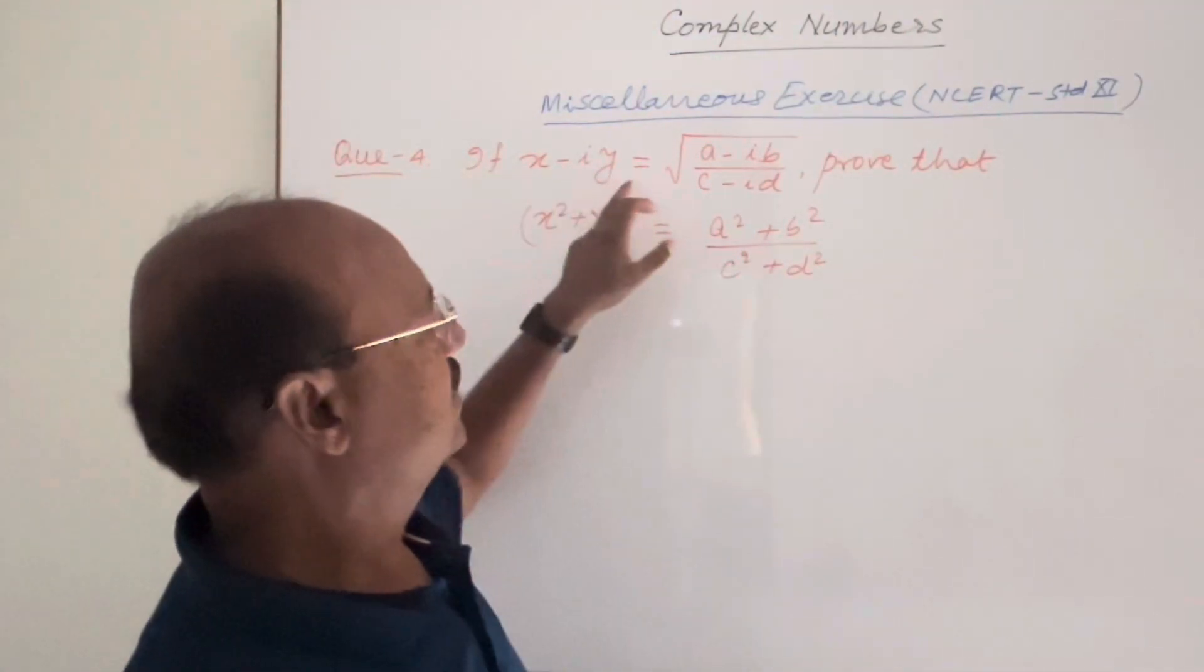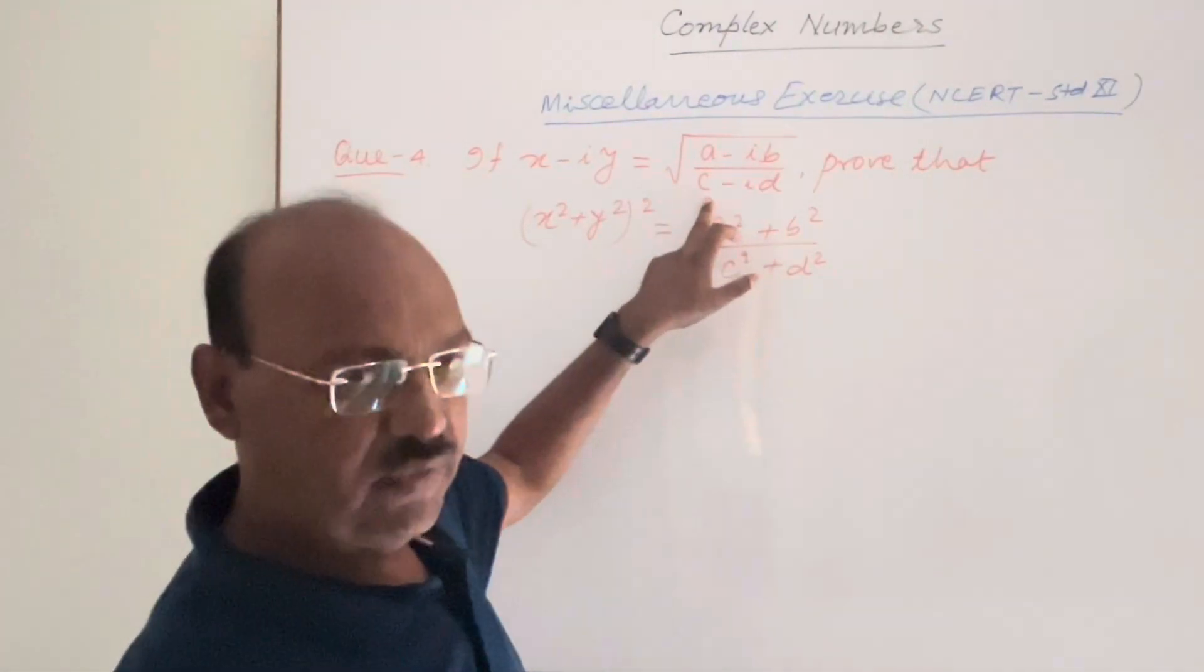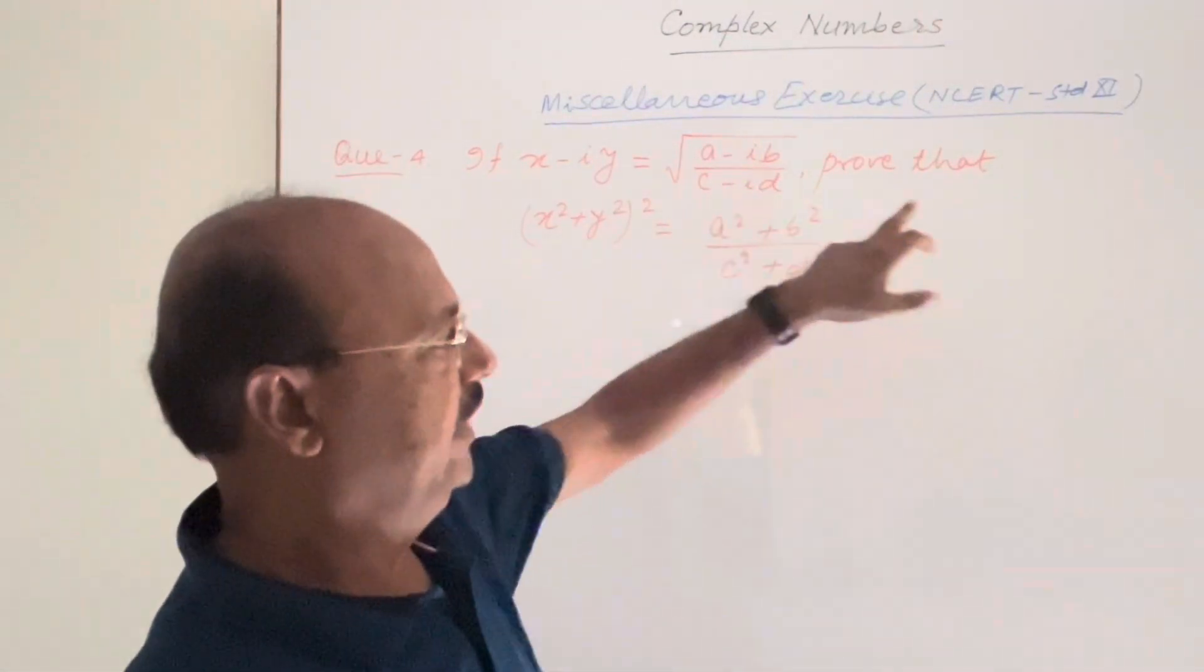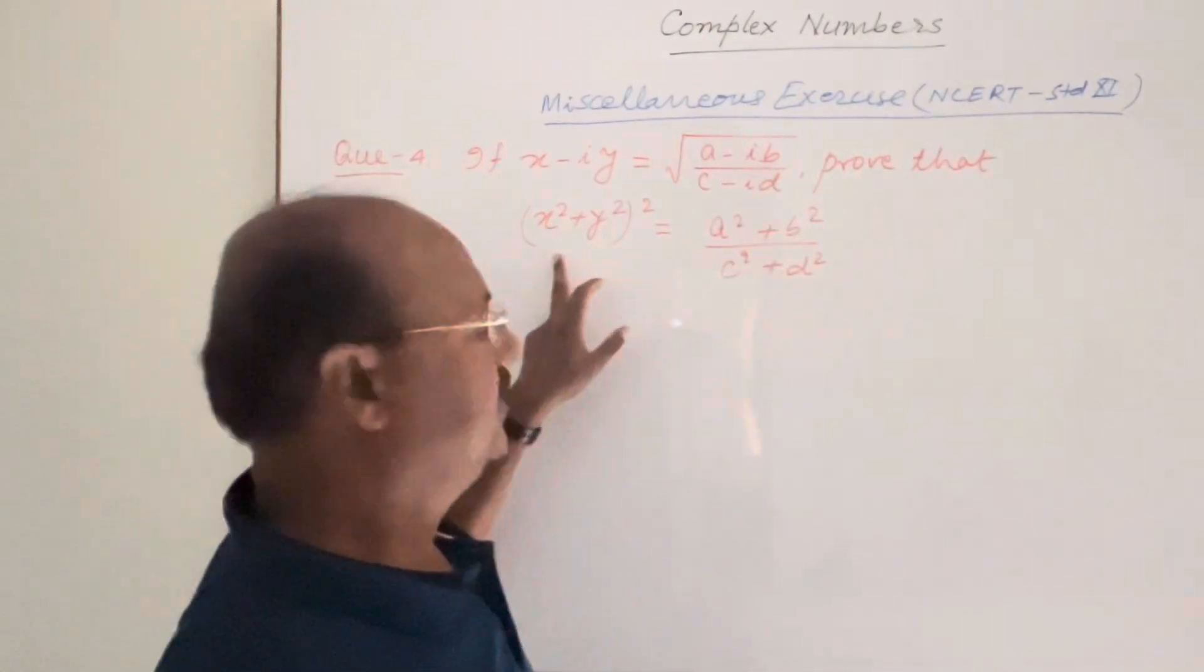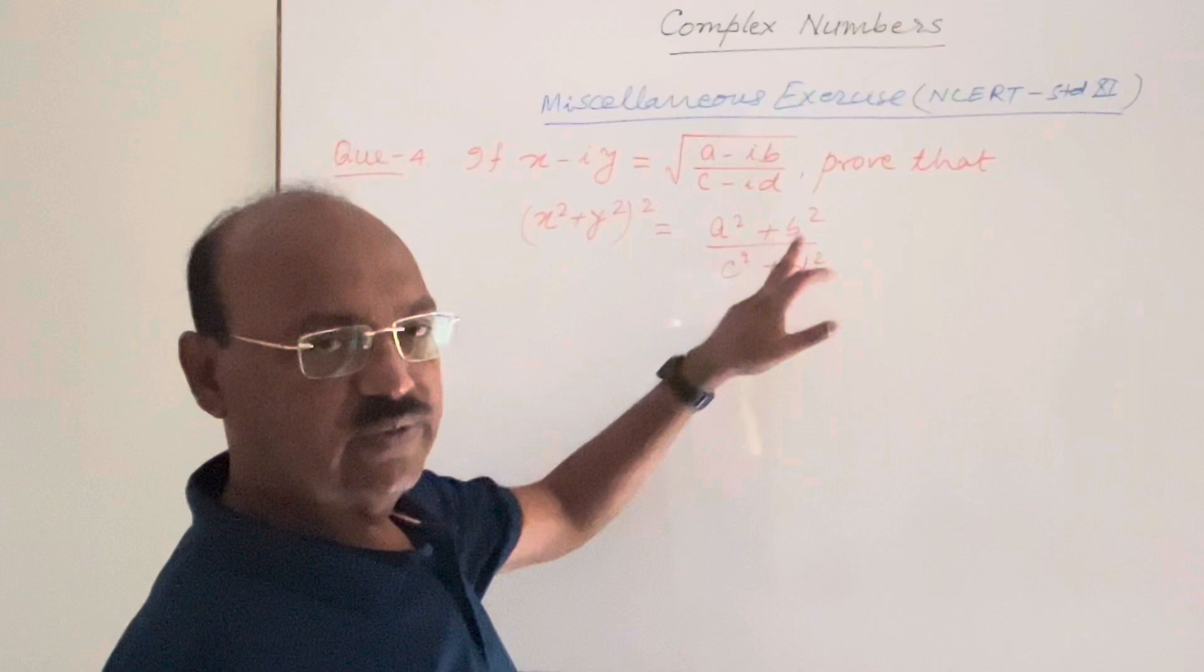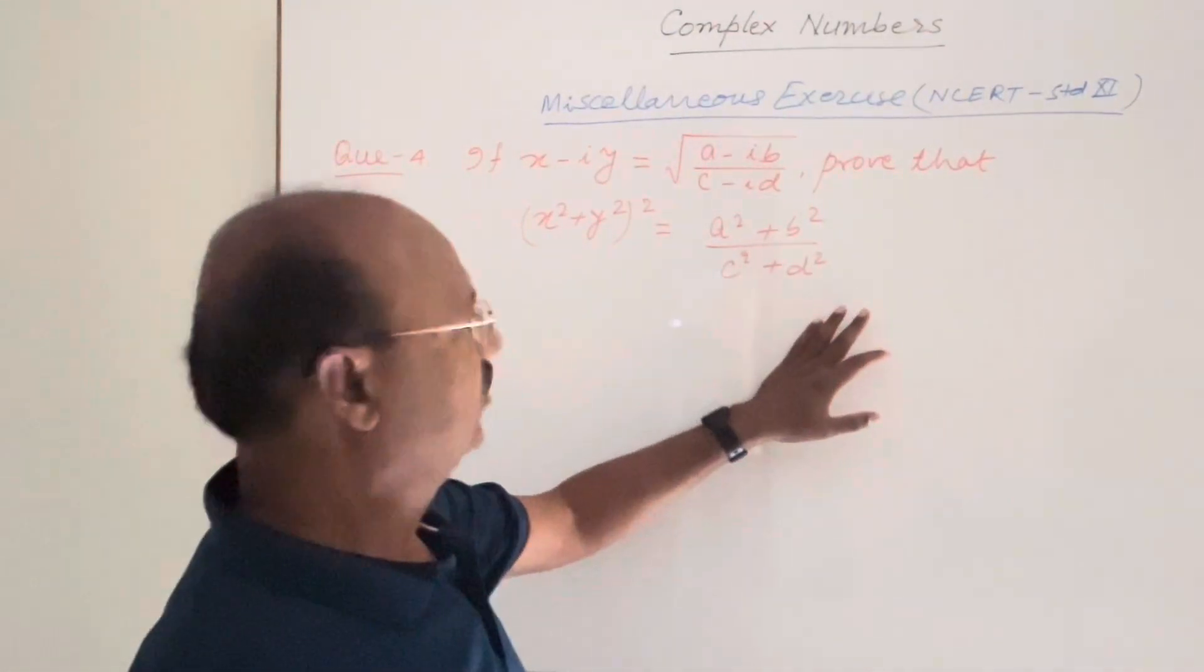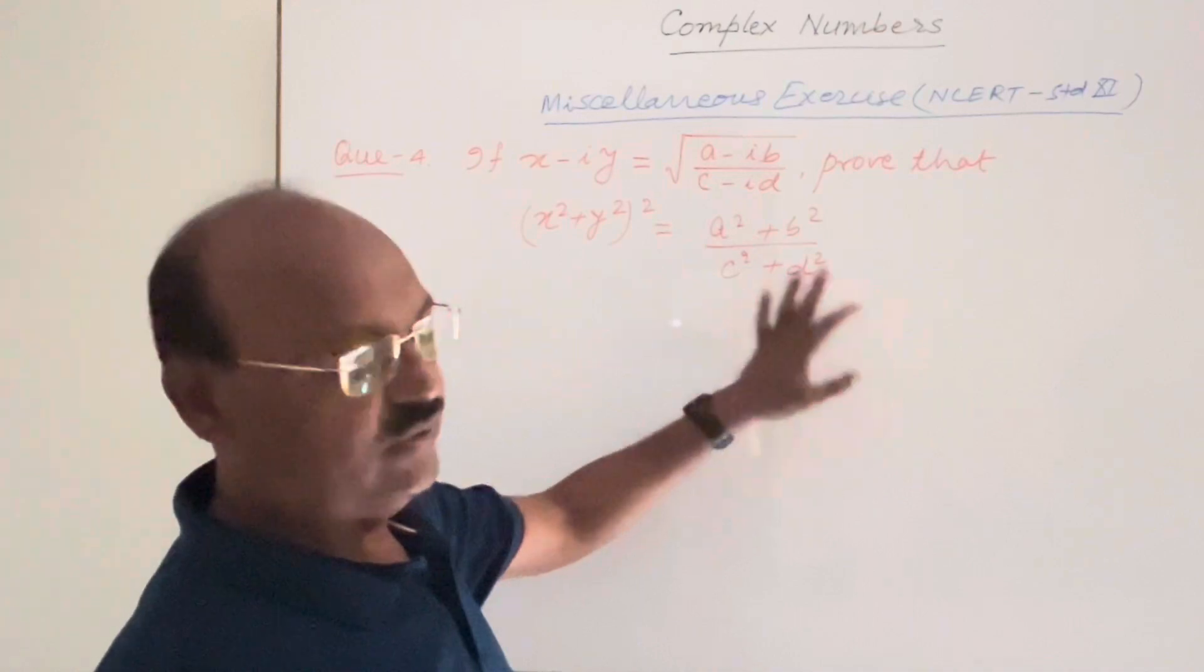If x minus iy is equal to root over a minus ib upon c minus id, then prove that x square plus y square whole square is equal to a square plus b square upon c square plus d square. Question not difficult but question is very important.